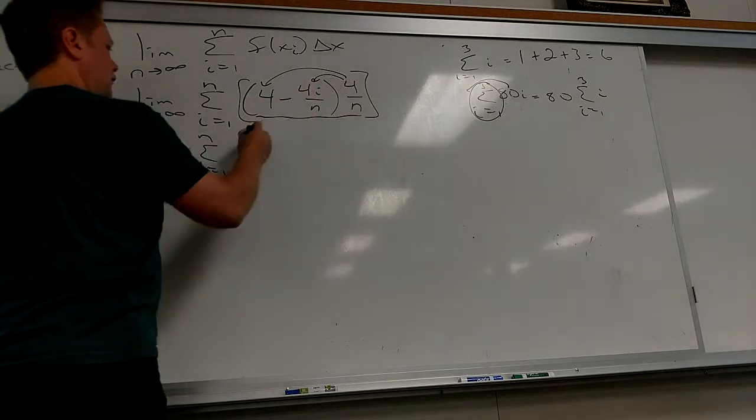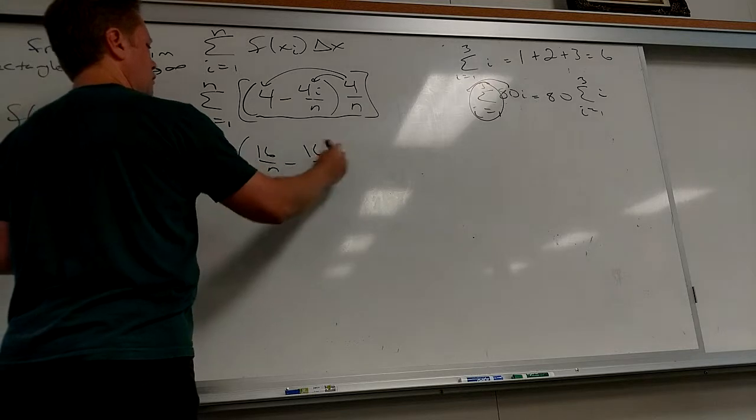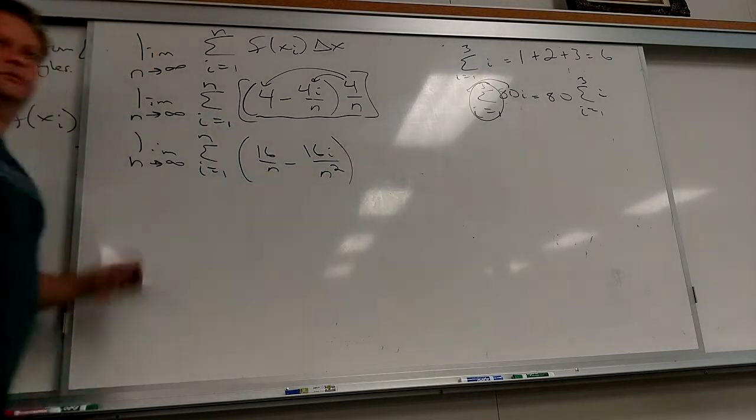So then you get 16 over n minus 16i over n squared. Stop there for a second.